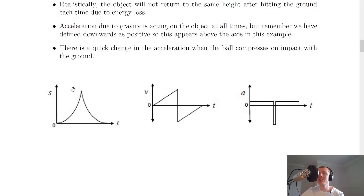For the displacement-time graph, the bouncing ball accelerates at a constant rate downward — covering more displacement just before hitting the ground — and then decelerates at a constant rate upward, covering less displacement per unit time. That's all from me. I hope you found the video useful — if you did, give it a like, subscribe, and I'll see you in the next one. Take care.